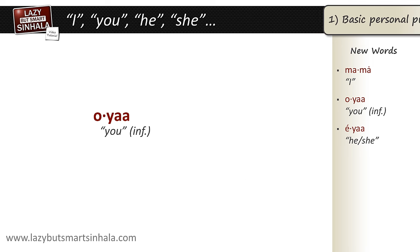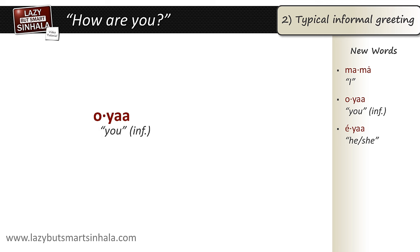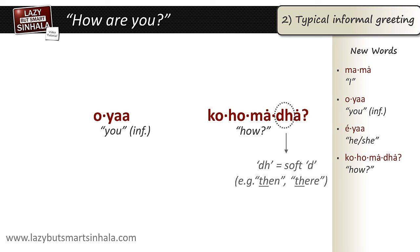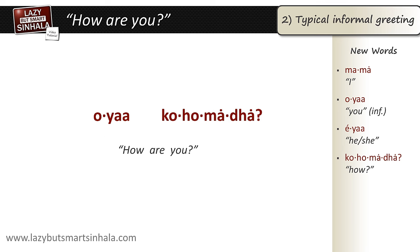Section 2: Typical Informal Greeting — learning to ask 'how are you.' You already know that the word for 'you' is oyaa. The word for 'how' is kohomadha. Don't worry about memorizing this word since we'll be using it very often. Just note that the 'dh' represents a soft 'd,' which is the sound we'd use when we say words like 'then' or 'there.' So the word for 'how' is kohomadha with a soft 'd.' To ask the equivalent of 'how are you,' we simply join these two words: oyaa kohomadha.